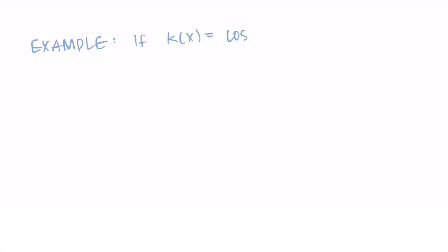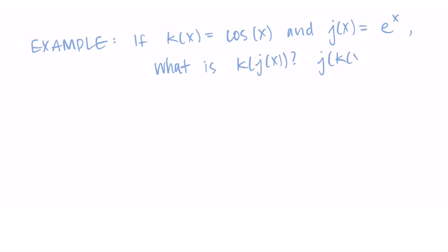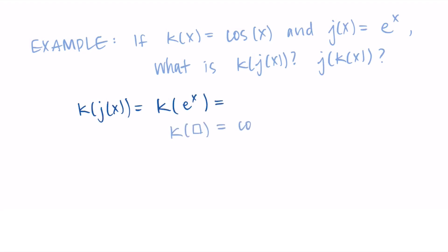Now let's say k of x equals cosine of x and j of x equals e to the x. We're going to find k of j of x and j of k of x — composing it both ways. For k of j of x: j of x is e to the x, so we're doing k of e to the x. Since k takes the cosine of its input, this gives us cosine of e to the x.